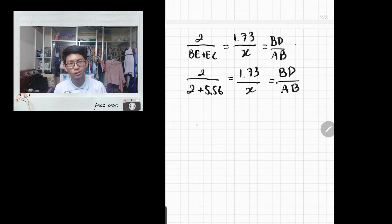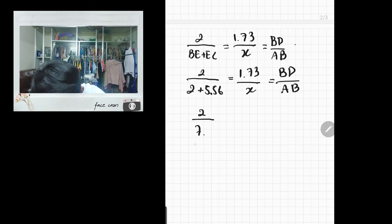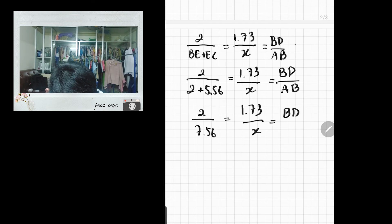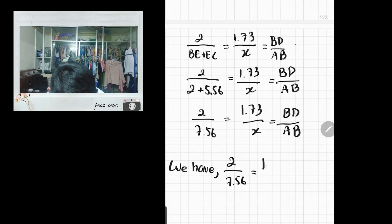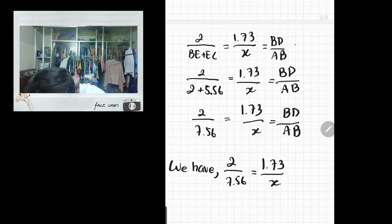Now it's time to solve for x. Let's plus BE and EC together first. Now we can say we have 2 over 7.56 is equal to 1.73 over x.